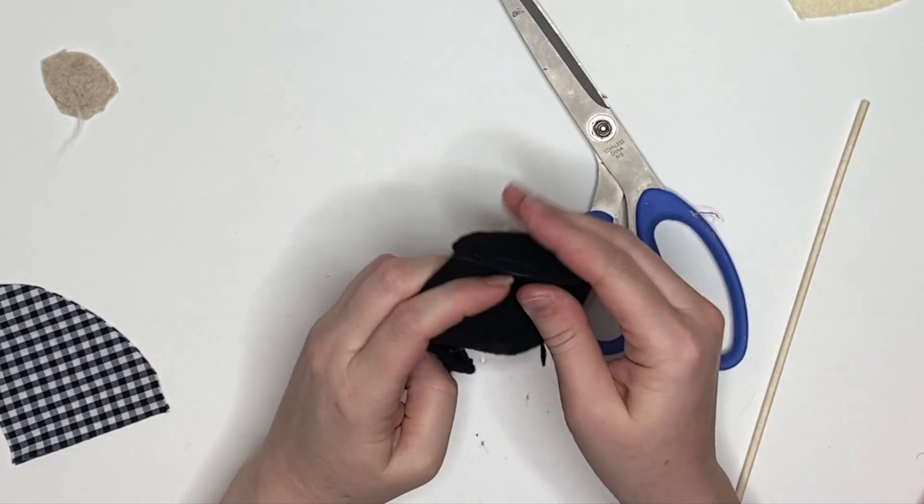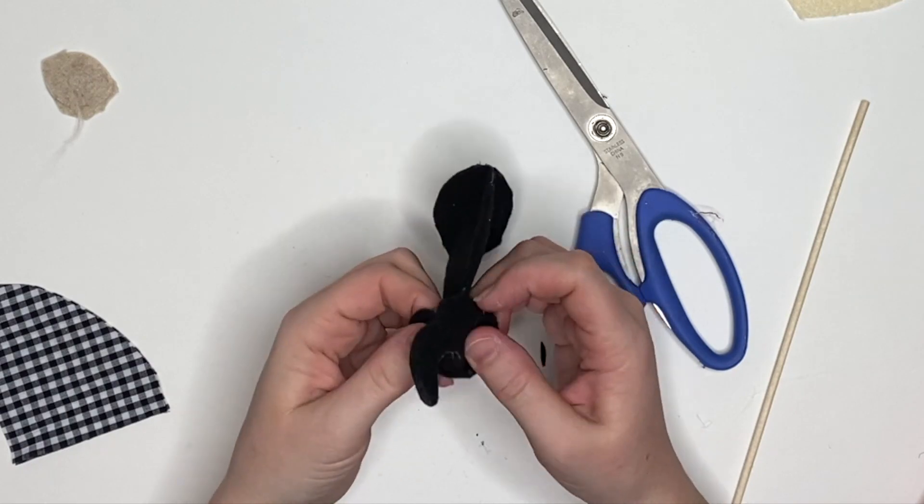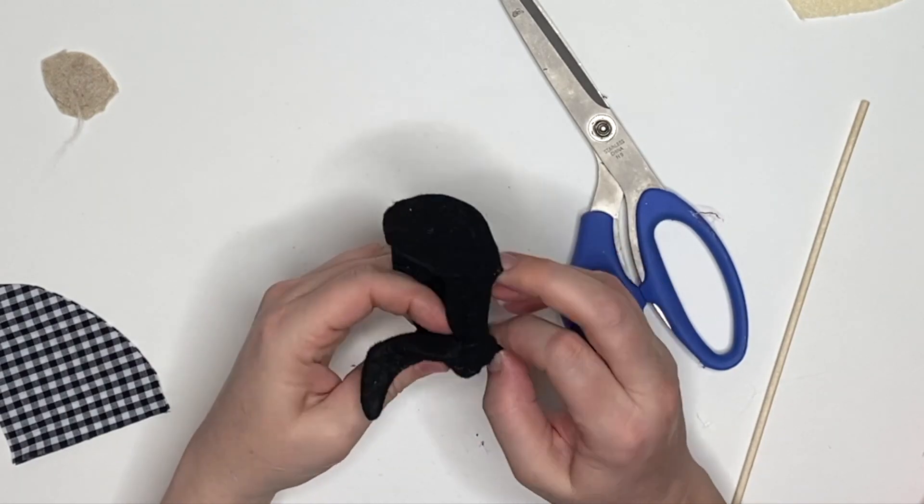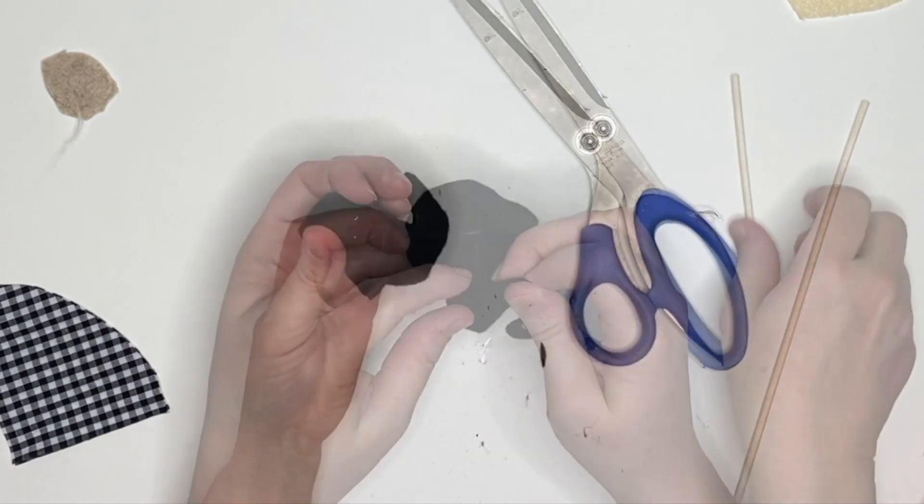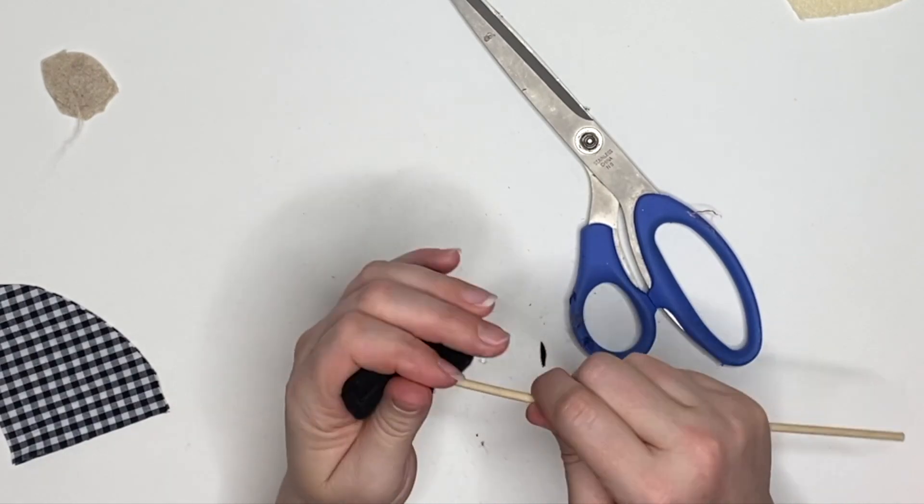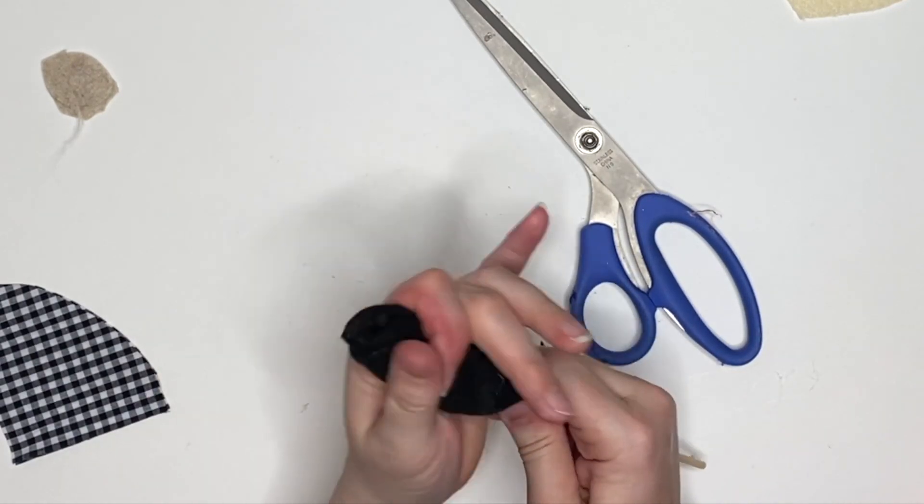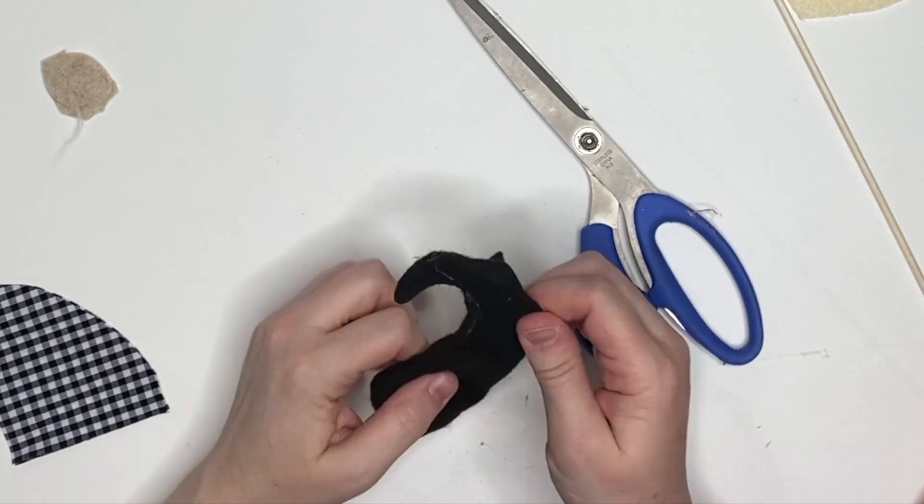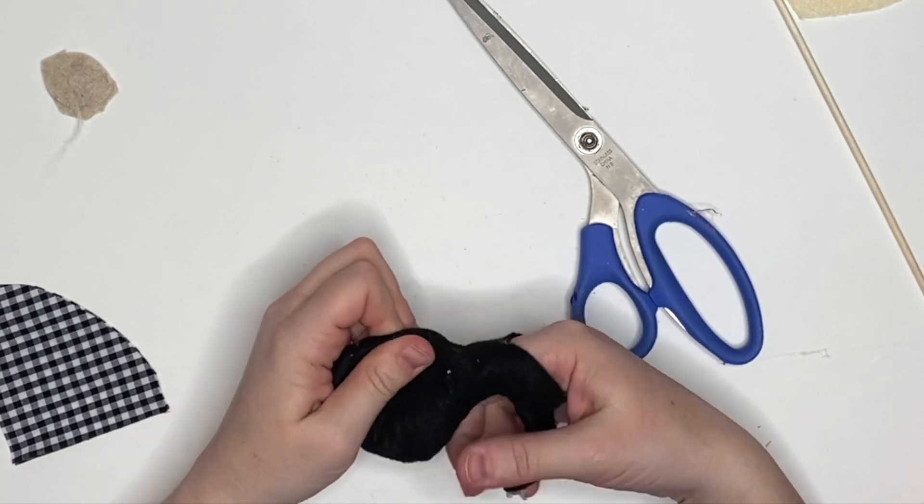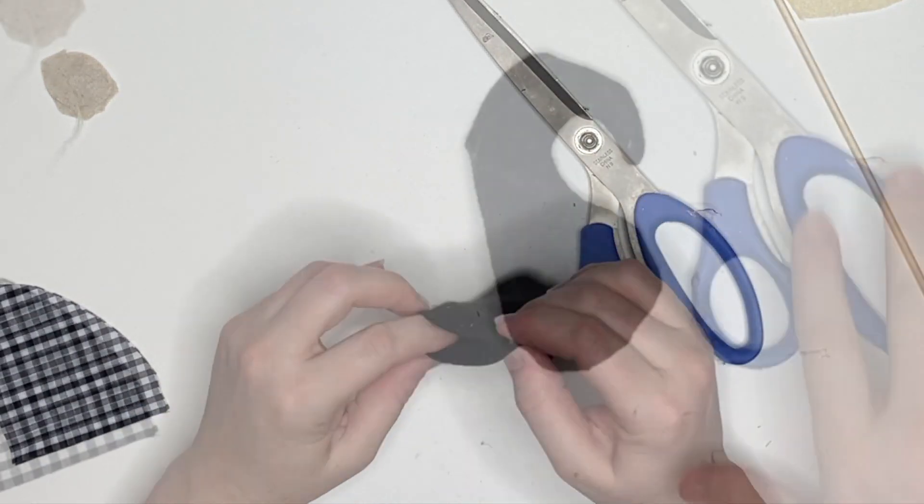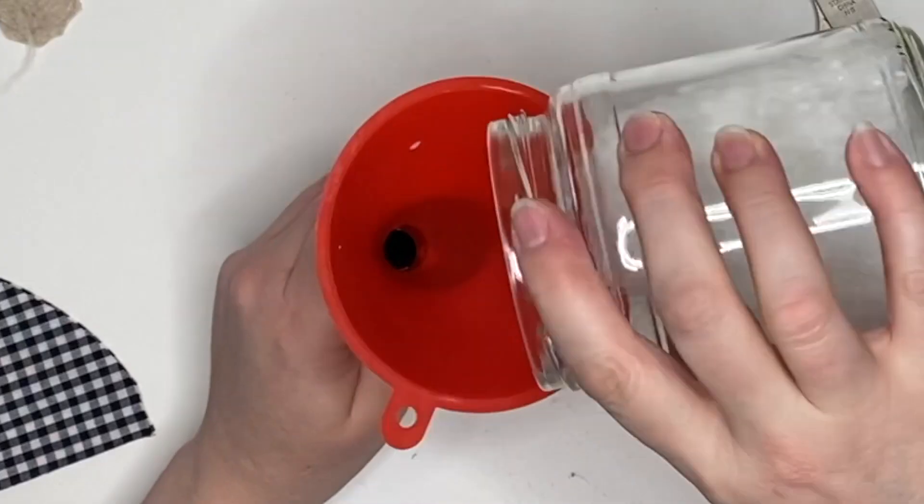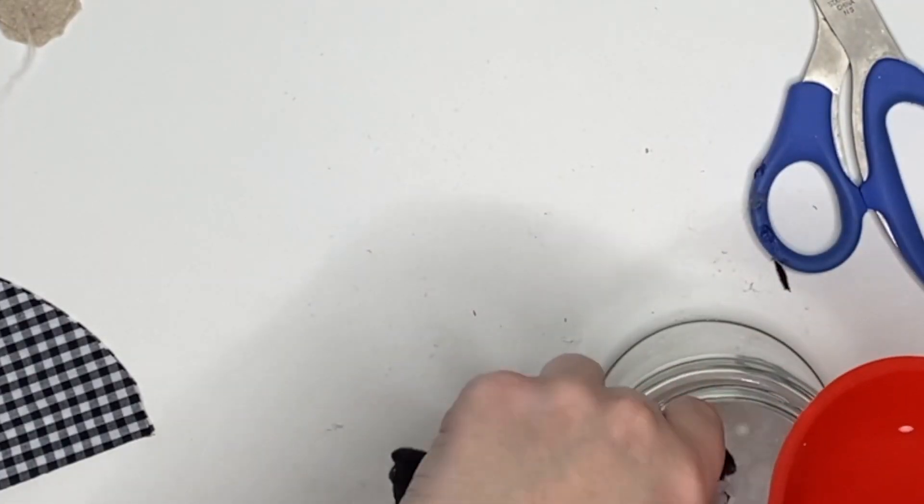So as you all know, I do test these patterns a lot to make sure that I get you the most easy way of doing something and I can assure you this is it. So when you go ahead to turn it out right sides out, just be sure not to poke a hole in anything. I do recommend using an eraser instead of that very thin bamboo skewer.